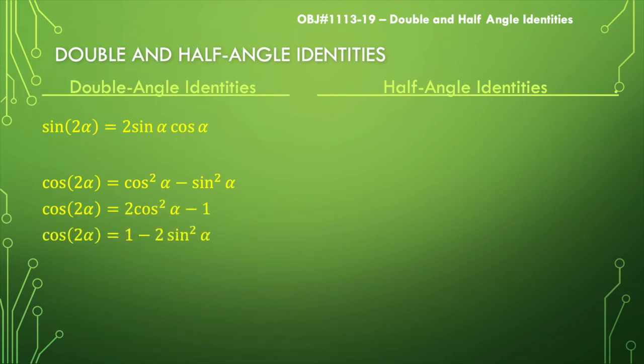So if I replace the sine squared with one minus cosine squared, you would end up with two cosine squared a minus one. And if I replace cosine squared of a with one minus sine squared of a, you would get one minus sine squared of a minus sine squared of a, or one minus two sine squared of a. Those are important later on.